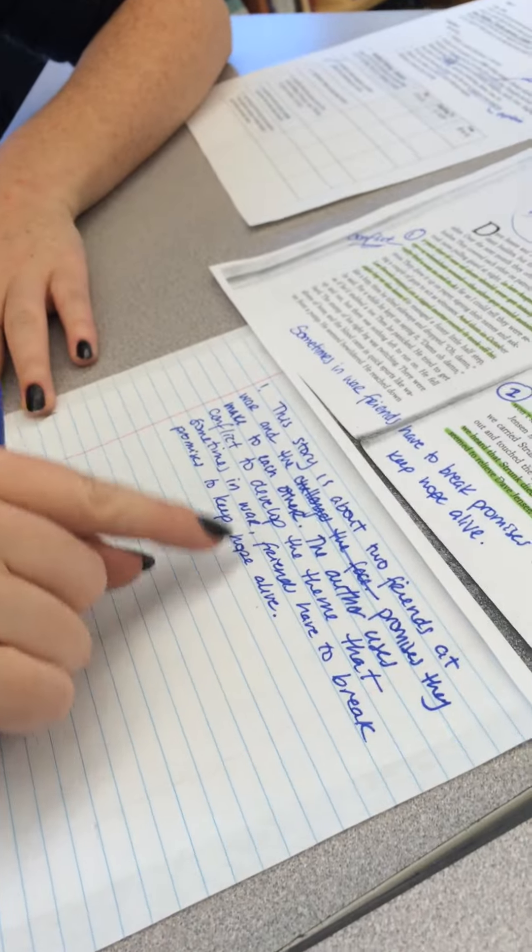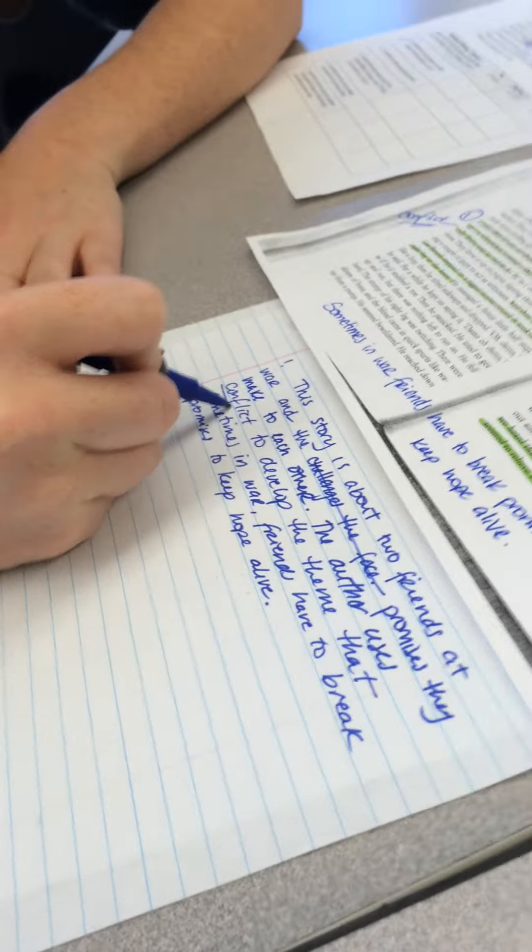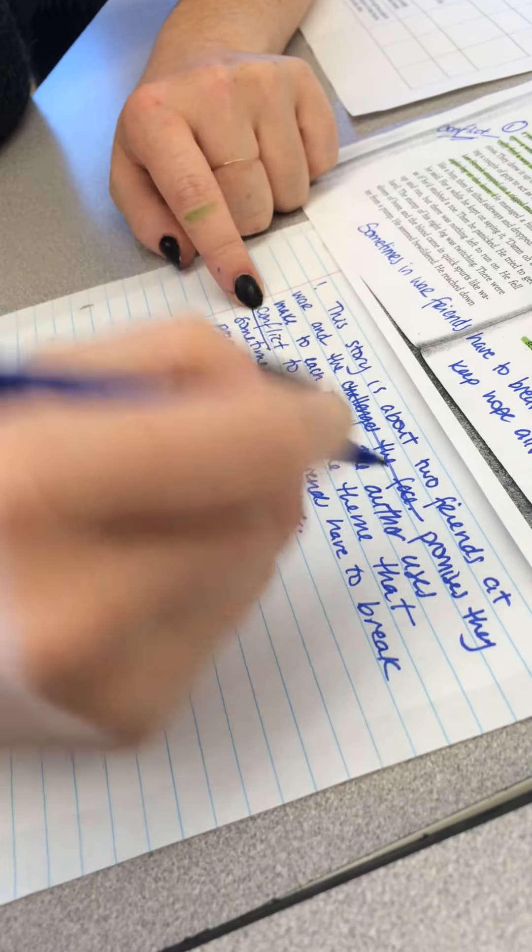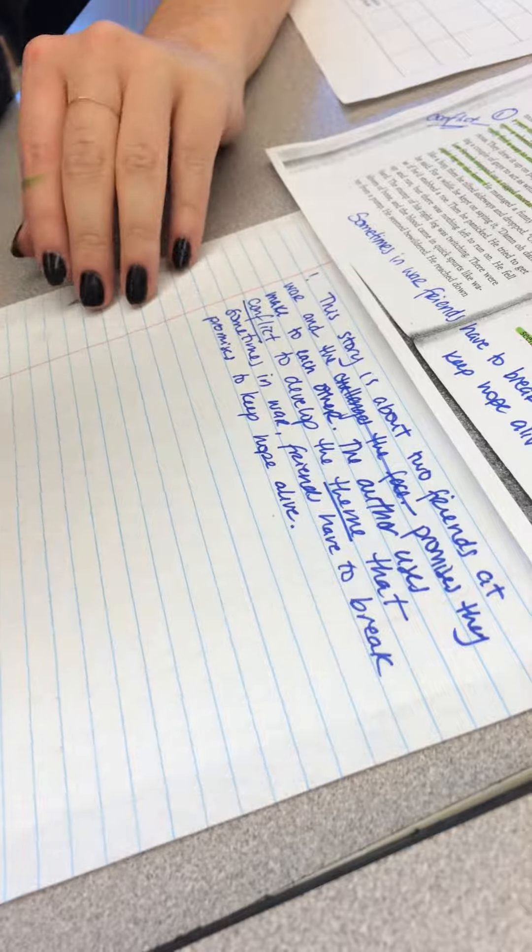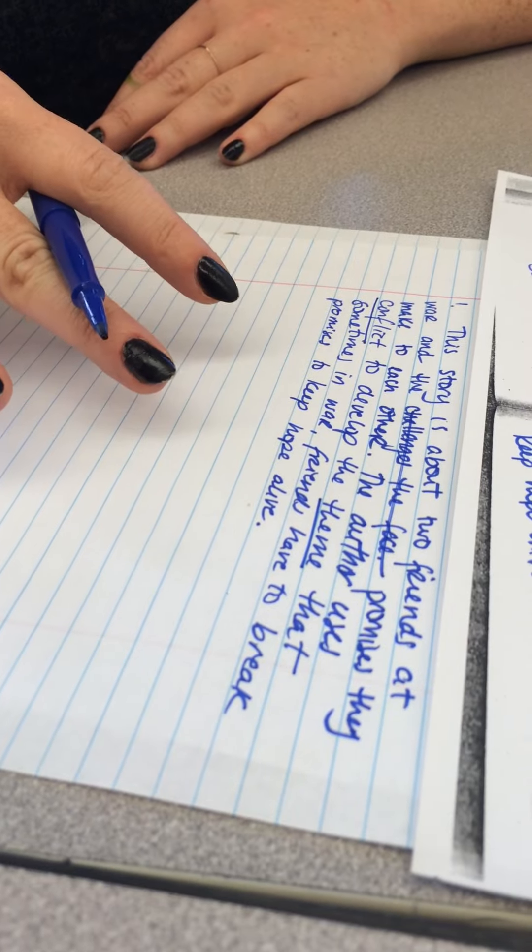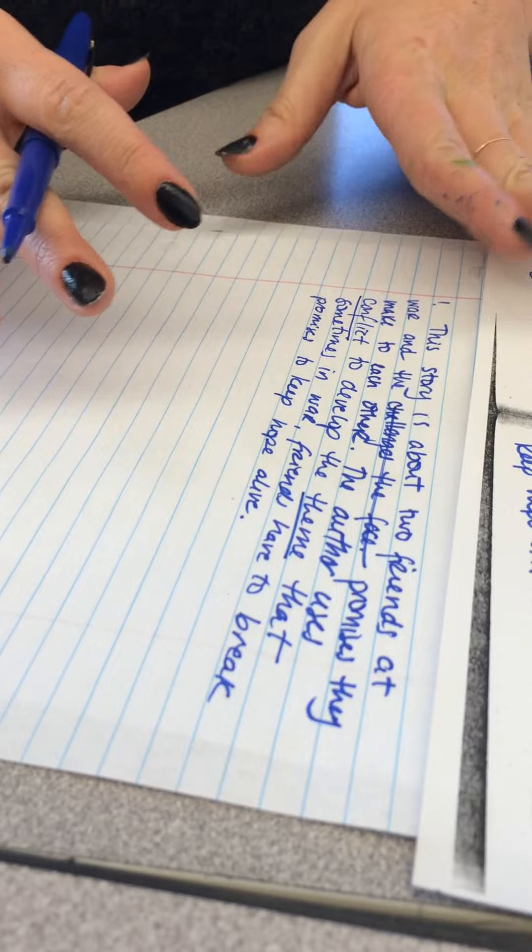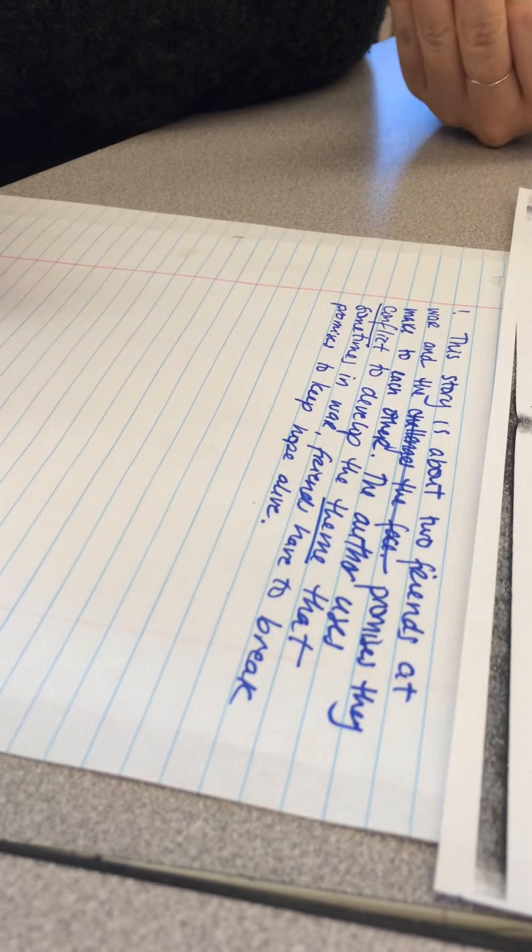So, I have my topic sentence that connects the literary element to the theme. What I have to do right now is I have to think about how am I going to prove to them that this actually happens, because this is my idea, and I have to prove that my idea is real.